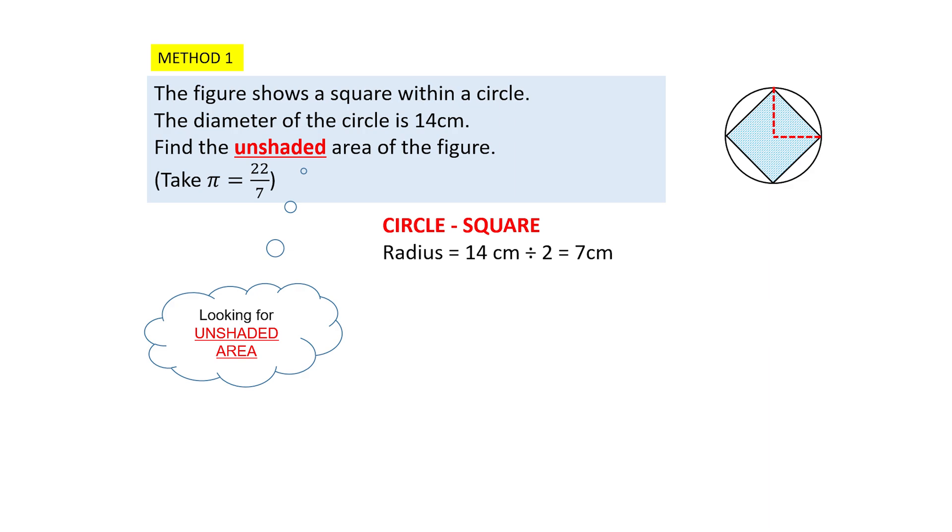So we know the diameter is 14 cm, which means that the radius is 14 cm divided by 2, which equals 7 cm. So to find the area of the circle is 22 over 7 times 7 times 7 equals 154 cm². So this is the easy part that is settled. We found the area of the circle.